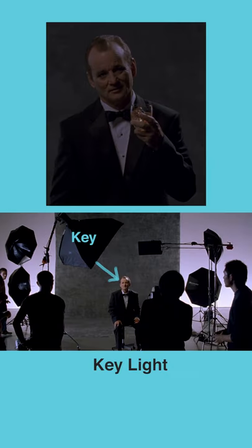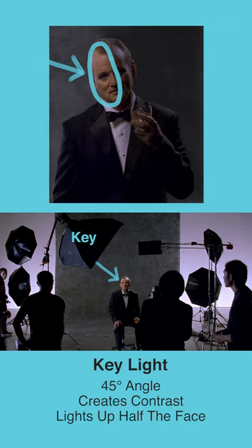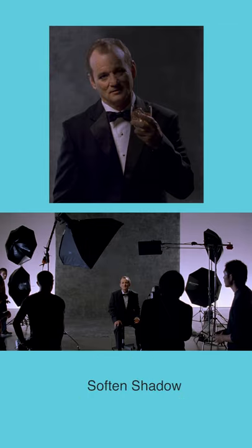The key light is the strongest source of illumination and classically is set up at a 45 degree angle to the character. This creates contrast and lights up the face, leaving some of the face in shadow.